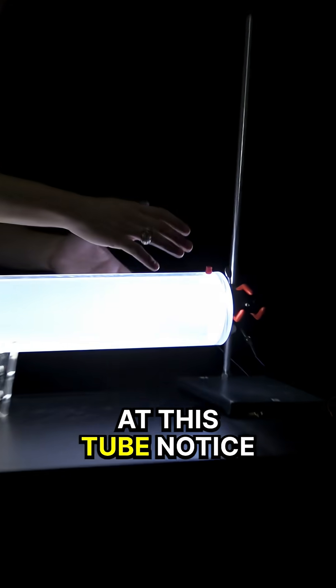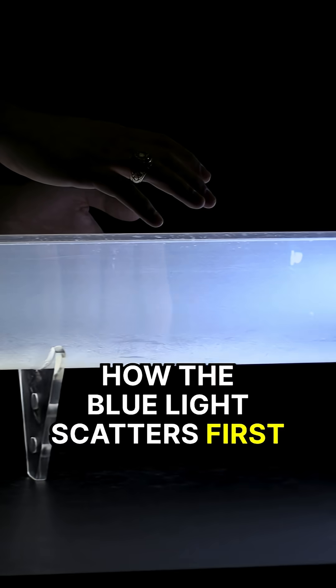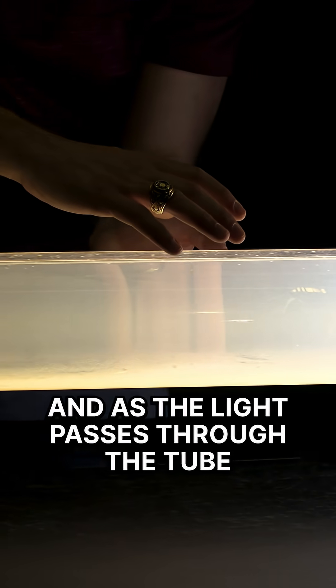So if we look at this tube, notice how the blue light scatters first from this white LED. And as the light passes through the tube, we start to see the yellows and the oranges.